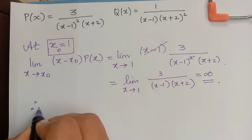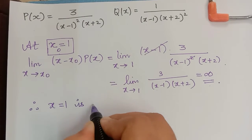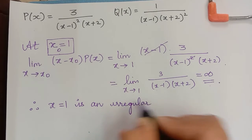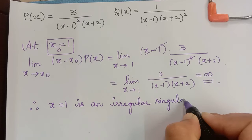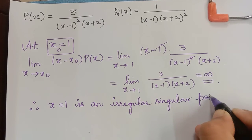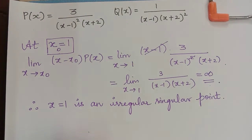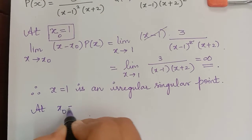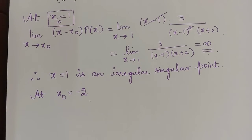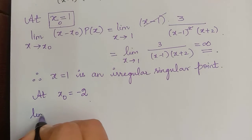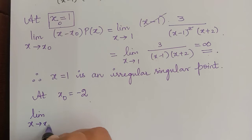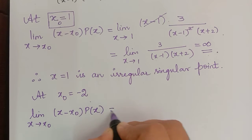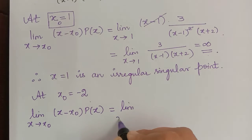Therefore, x = 1 is an irregular singular point. Now the next point we obtained is x = -2, so at x₀ = -2 let us check the nature of this point.